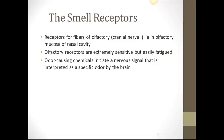The smell receptors: receptors and fibers of the olfactory, or first cranial nerve, lie in the olfactory mucosa of the nasal cavity. Olfactory receptors are located in the epithelial tissue in the upper part of the nasal cavity. Olfactory receptors are extremely sensitive but are easily fatigued — that's why when we smell a perfume, we can smell it at first, but the more we try to sniff it, the smell gets used up and we can't smell it anymore. Odor-causing chemicals initiate a nerve signal that is interpreted as a specific odor by the brain. In order to detect odor, chemicals must dissolve into the watery mucus lining the nasal cavity.